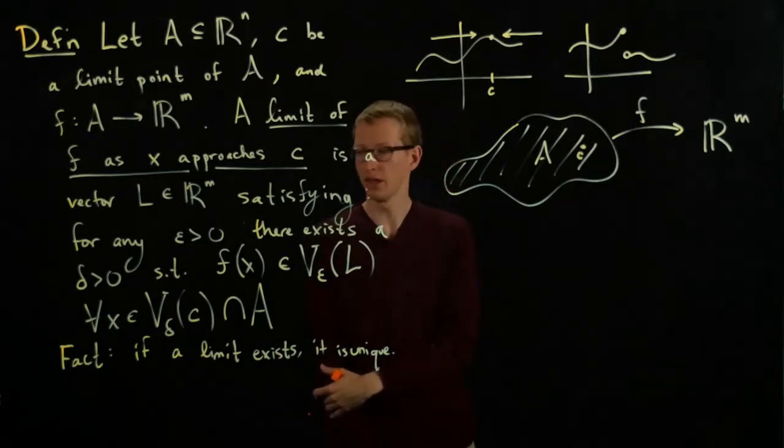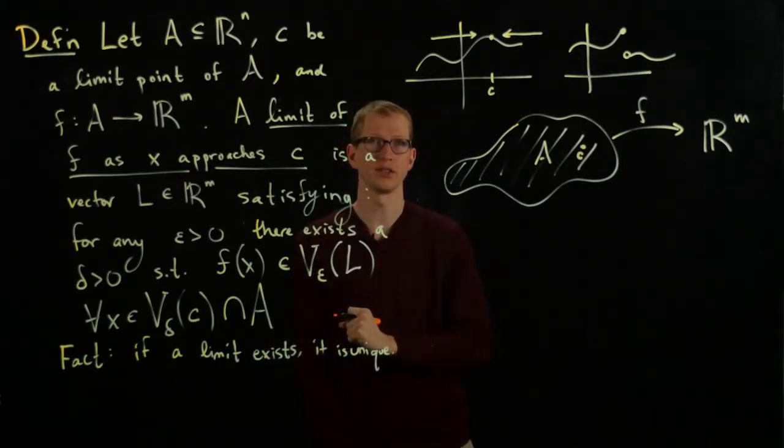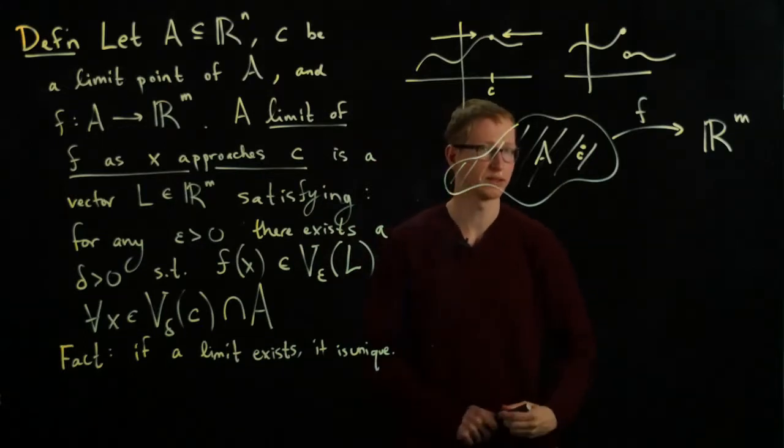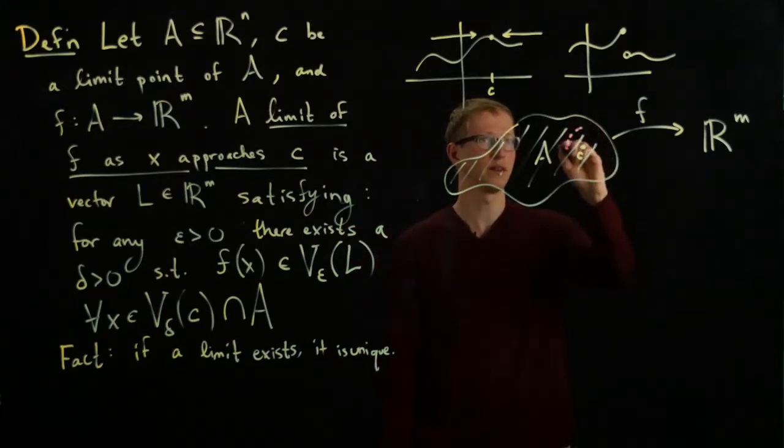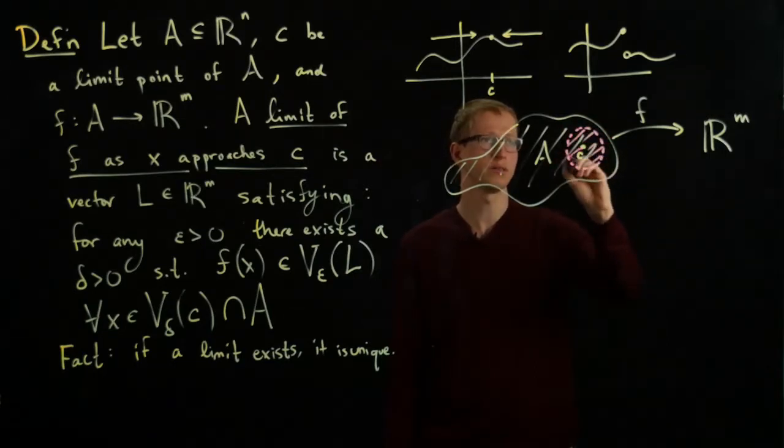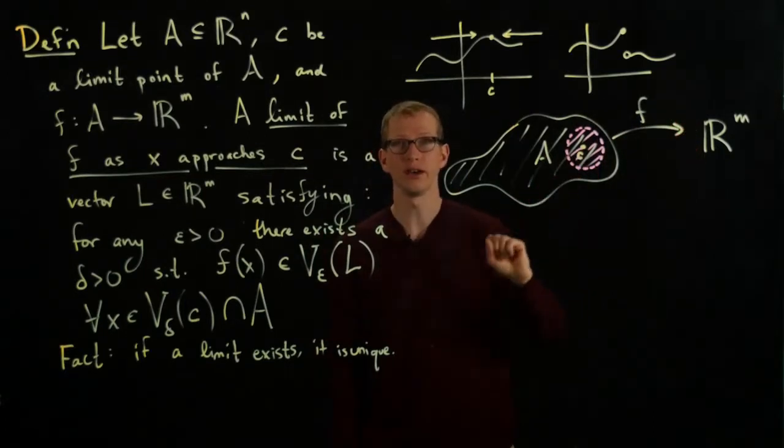And this condition has to hold true for any epsilon you give me, I have to provide such a delta. So I have to construct the delta in the domain space, so that's here. I have to find a delta small enough so that the image of this ball intersected with A has to be contained within an epsilon neighborhood of L.